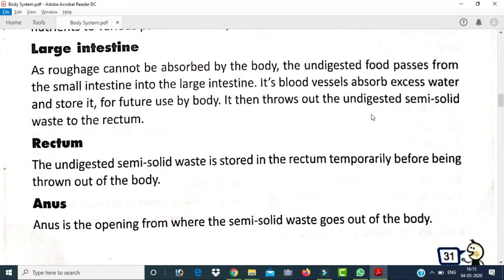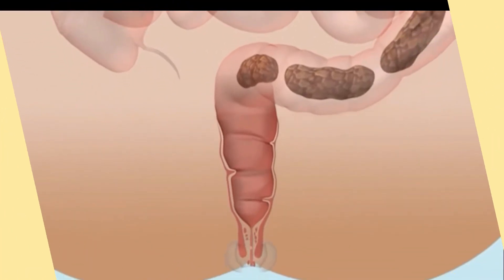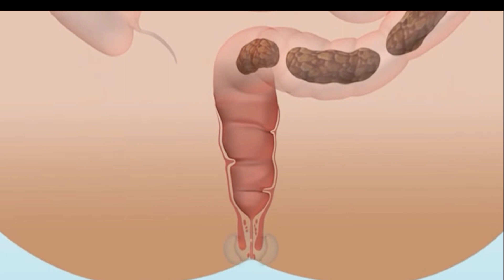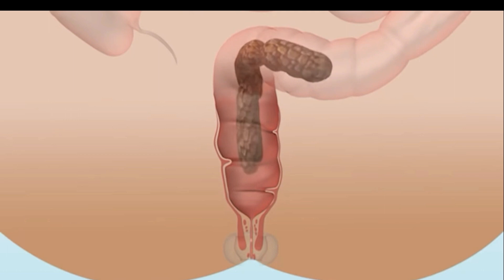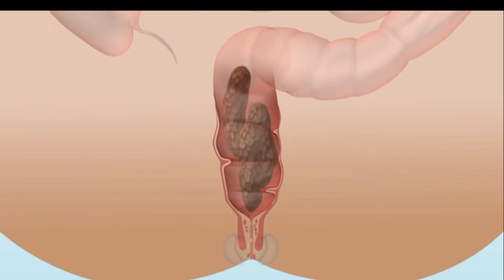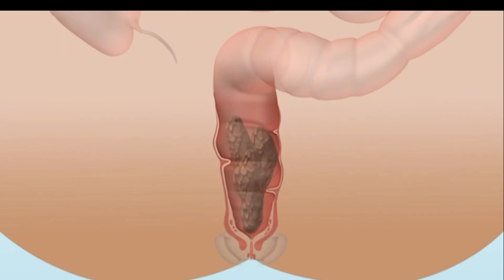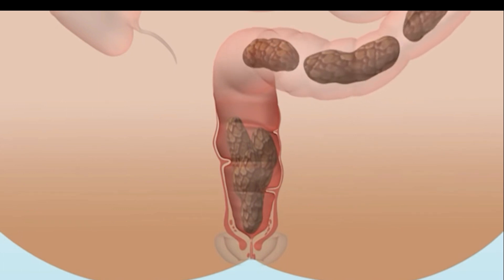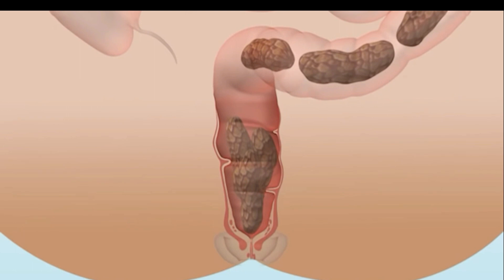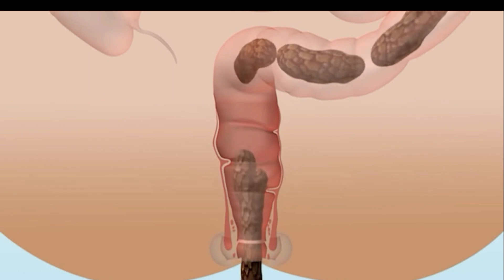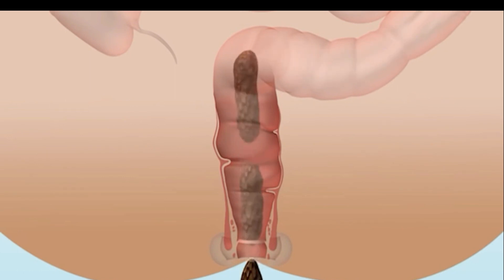The large intestine then passes the undigested semi-solid waste to the rectum. The rectum temporarily stores this undigested semi-solid waste before it is removed from the body. The anus is the opening from where the semi-solid waste exits the body.